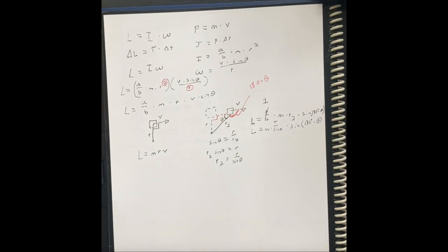m times r over sine of theta times sine of 180 degrees minus theta. Now, can we simplify this any further? This seems like a lot of math. Well, we can.